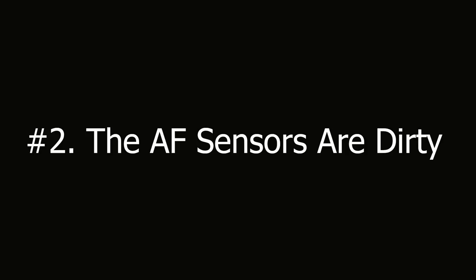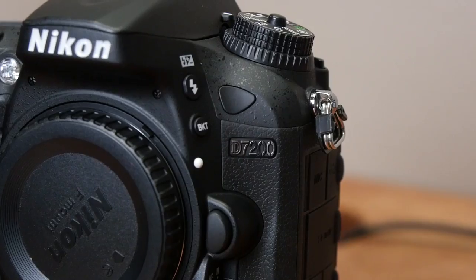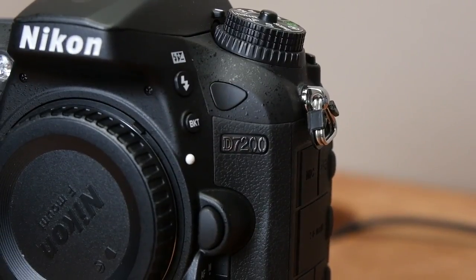Number two: the AF sensors are dirty. If you find your camera seems to become inconsistent or unreliable with its autofocus, it may be time to clean your AF sensors. When it comes to cleaning your camera sensors, most people only think of the main imaging sensor, but you also have a group of AF sensors right under your mirror. If they get dusty or dirty, it can definitely cause problems with autofocus consistency, especially in low light or with lower contrast subjects. I actually had this problem recently on my D7200 and was able to quickly clear it up using the simple method I'm about to show you.